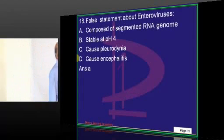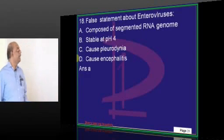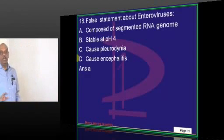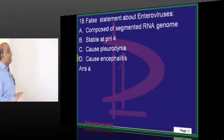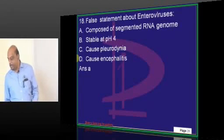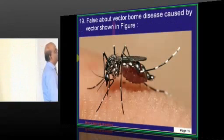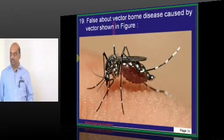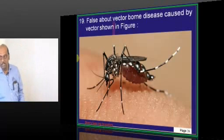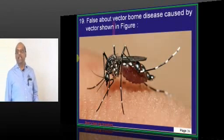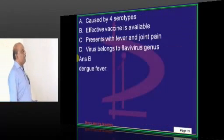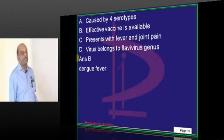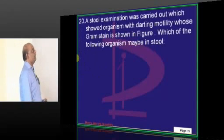About enteroviruses: they are stable at pH 4, they lead to pleurodynia, and they cause encephalitis — these are all true statements. Regarding the tiger mosquito: it transmits the Aedes mosquito-borne dengue, and there is no effective vaccine for dengue, as you all know very well.